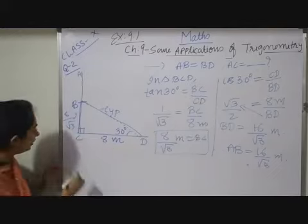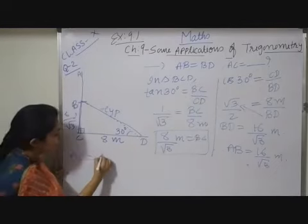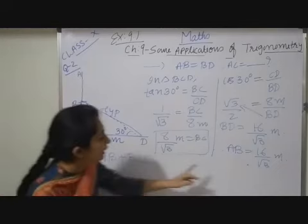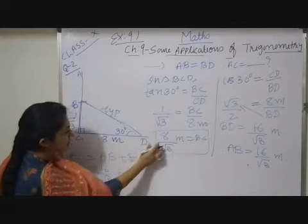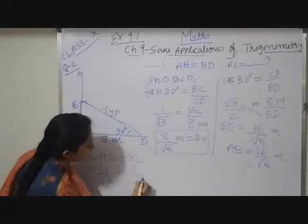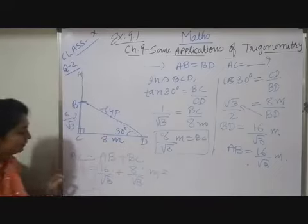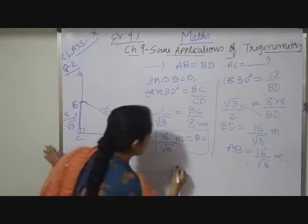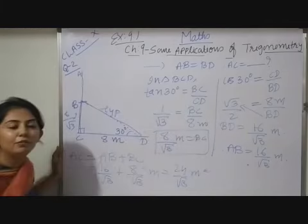Now to get the value of AC, what I will do? AC is equals to AB plus BC. So AB plus BC. Now AB value is known to us, that is 16 upon root 3, plus this value we also know, 8 upon root 3 meters. Now LCM will be obviously here root 3. So 16 plus 8, that is 24 upon root 3 meters.